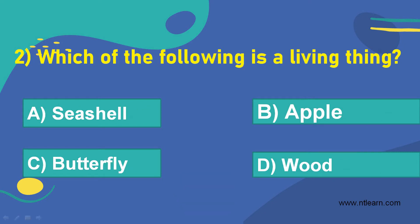Which of the following is a living thing? Option A: seashell. Option B: apple. Option C: butterfly. Option D: mud.